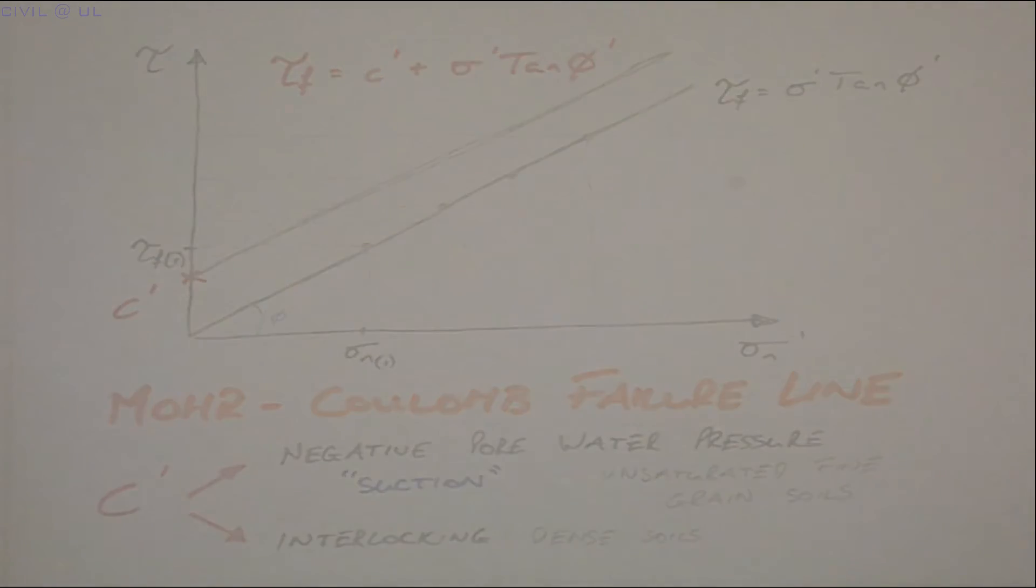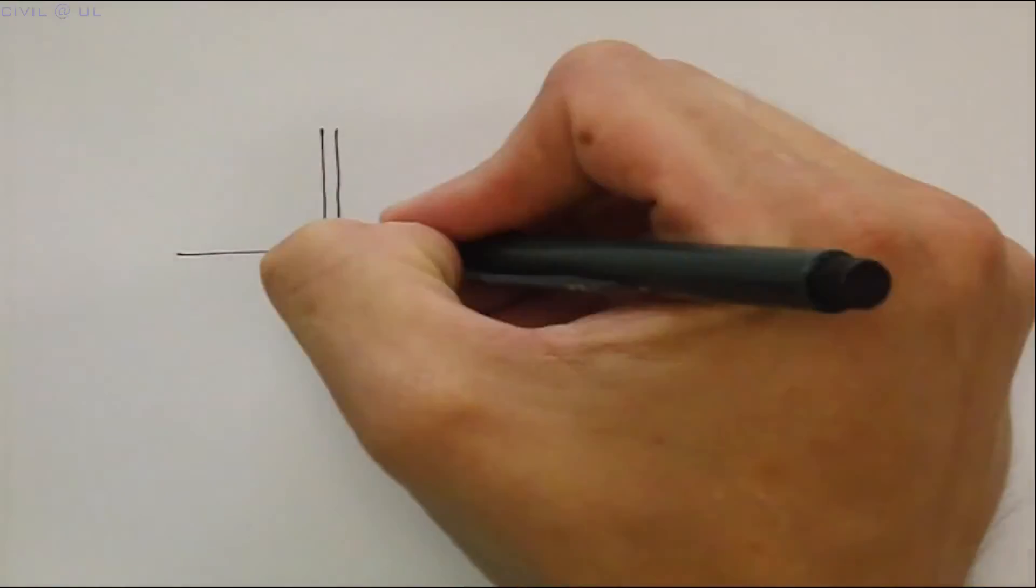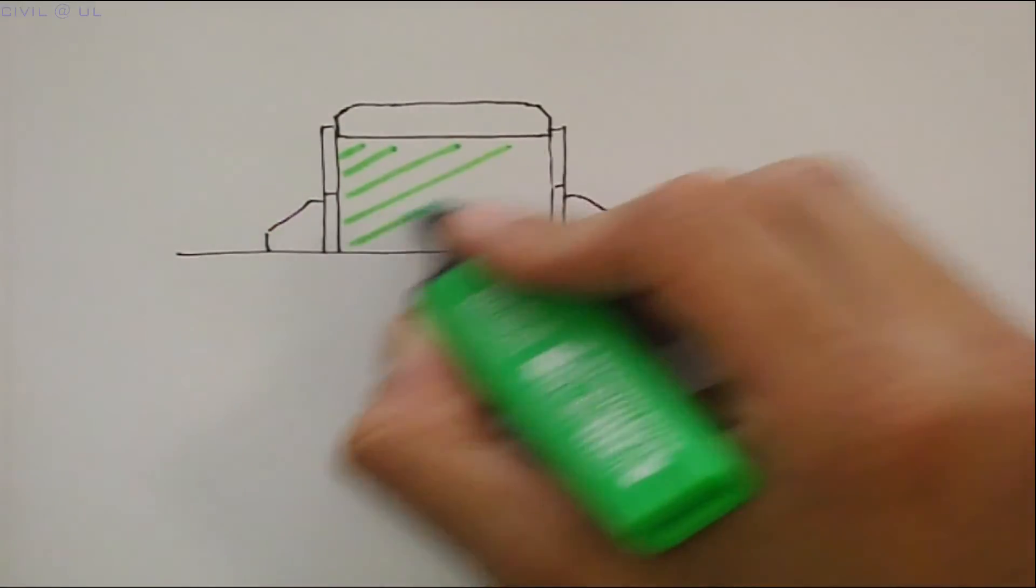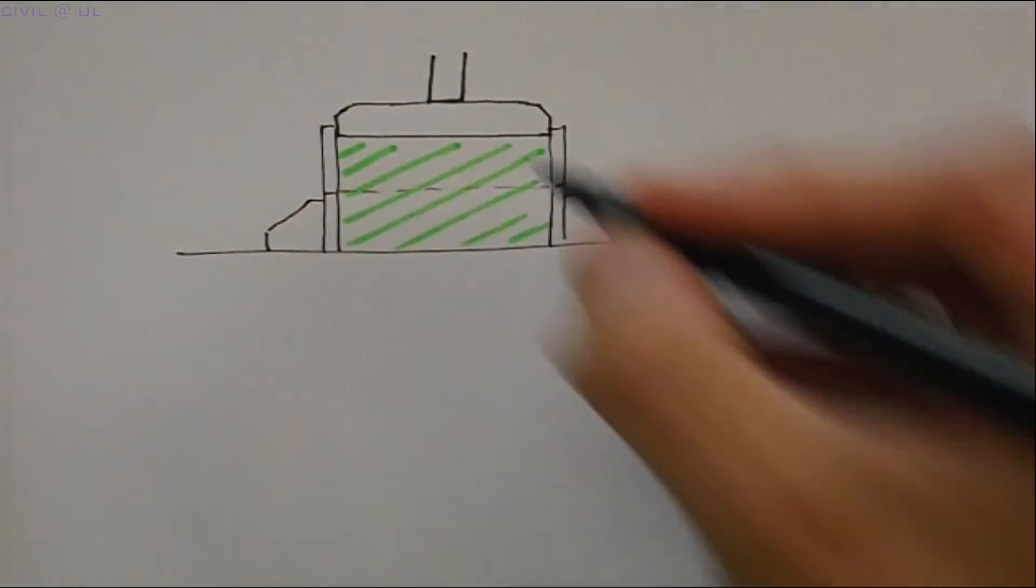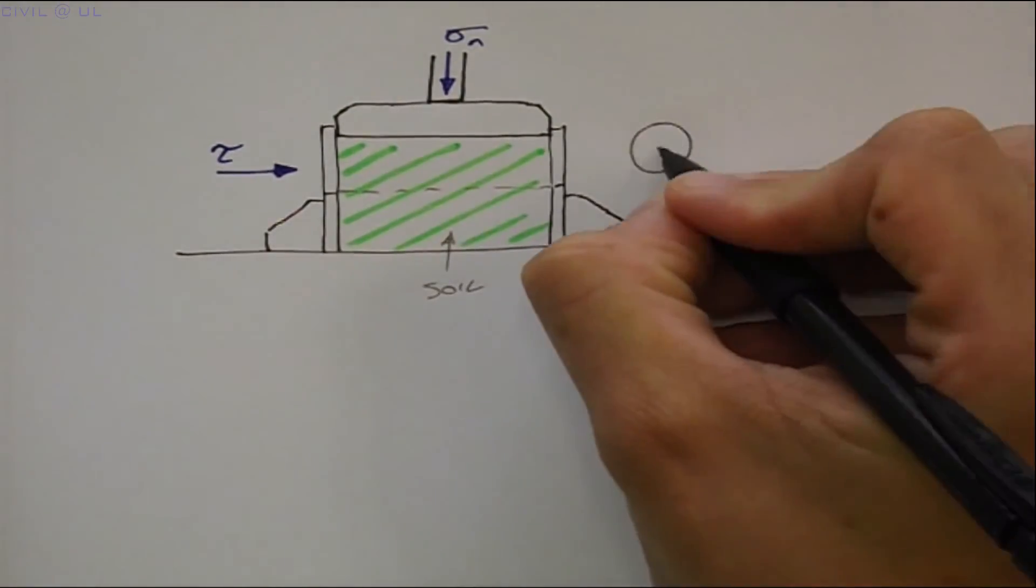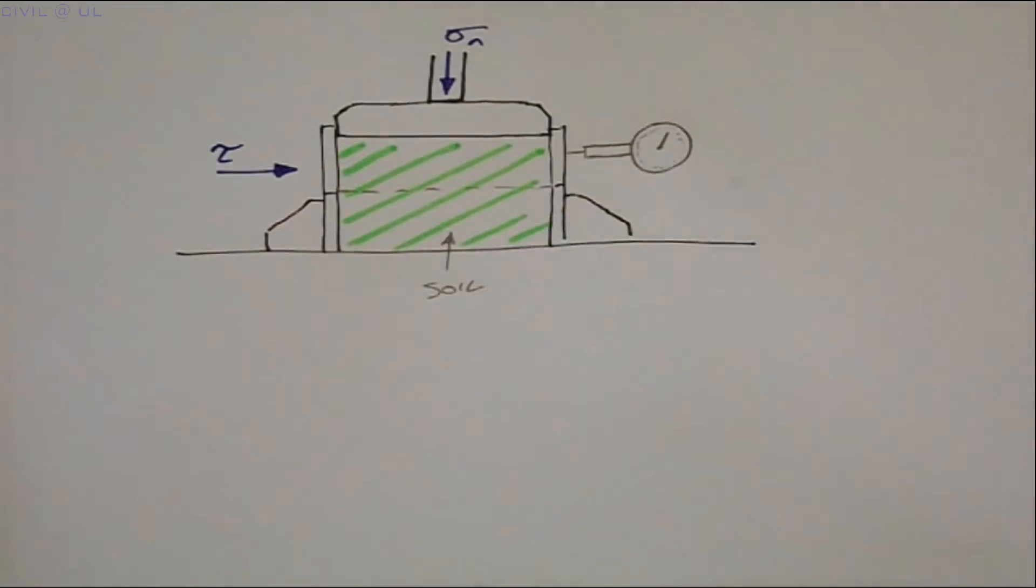Again, we will use the shear box apparatus to illustrate how loose and dense soil behaviours differ. The shear box is normally fitted with two dial gauges. One recording the horizontal displacement, H, and the other recording the vertical movement, V.